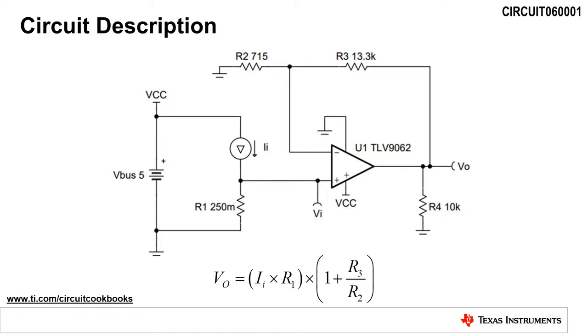Secondly, the sense voltage, or V sub I, is gained up by the non-inverting gain of the amplifier, which is 1 plus R3 divided by R2.